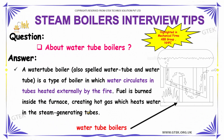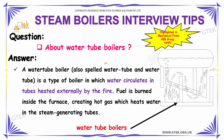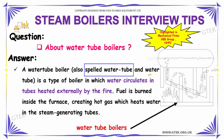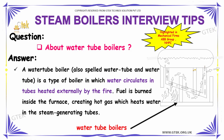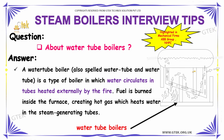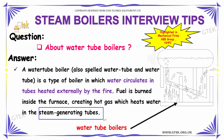We need to tell about the water tube boilers. A water tube boiler is considered to be a type of boiler in which the water circulates in tubes heated externally by the fire. Fuel is burnt inside the furnace creating hot gas which heats water in the steam generating tubes.